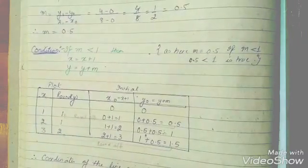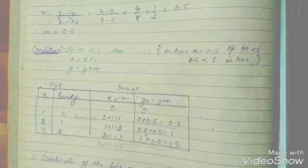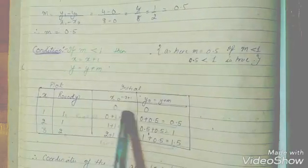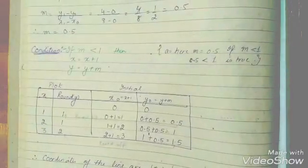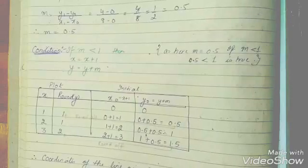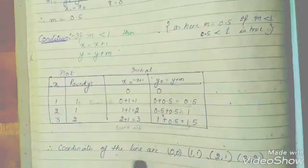So according to this question, the coordinates of the line are 0, 0, 0, 0, 1, 1, 2, 1 and 3, 2. And this option was given there in the exam. So this is correct.